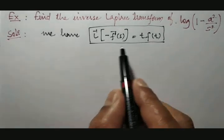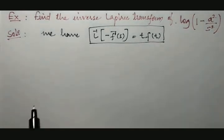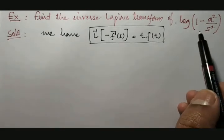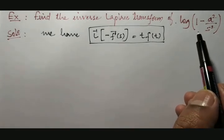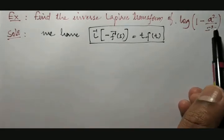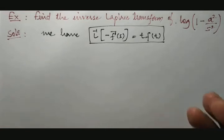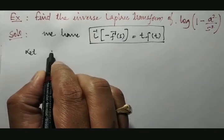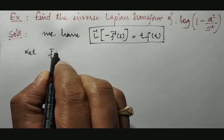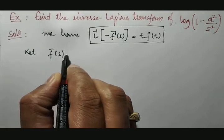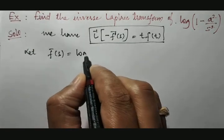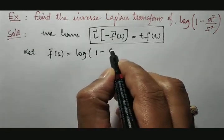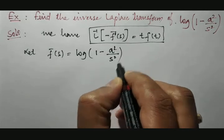As per this property, let us move with the given example. The given example involves the logarithm of 1 minus a-squared over s-squared, in which s is involved, so it represents f-bar of s. So, f-bar of s is equal to logarithm of 1 minus a-squared over s-squared.